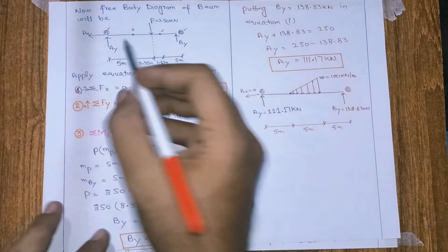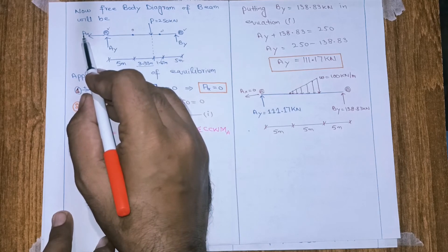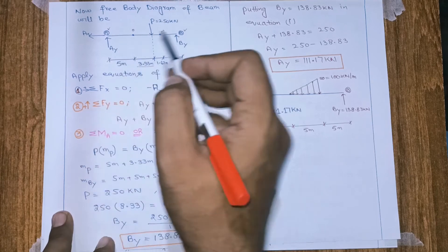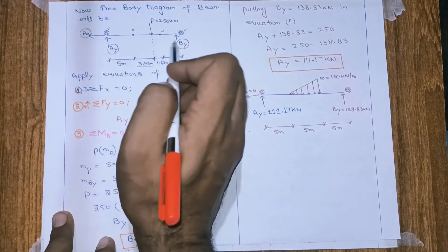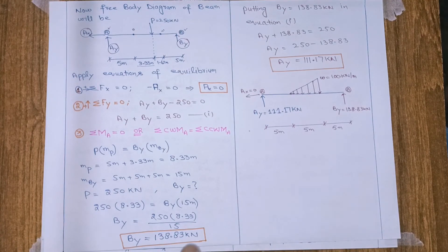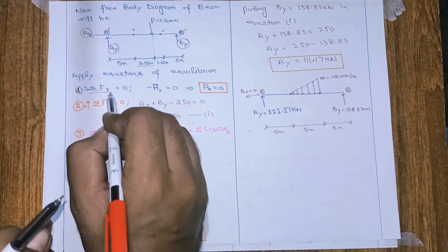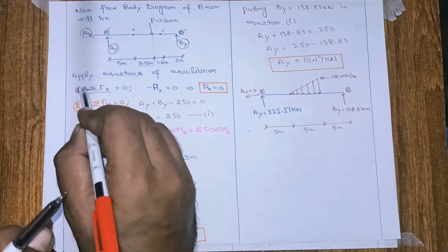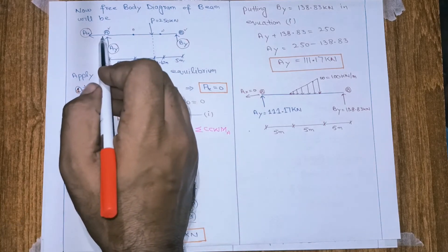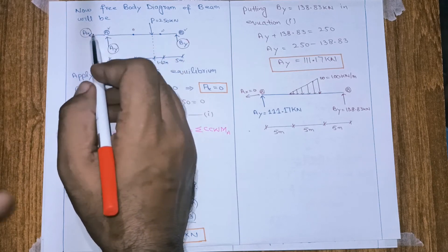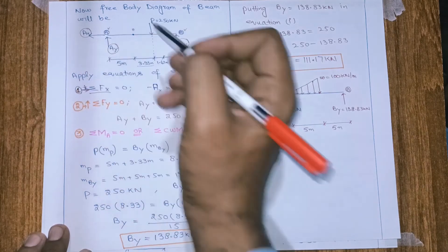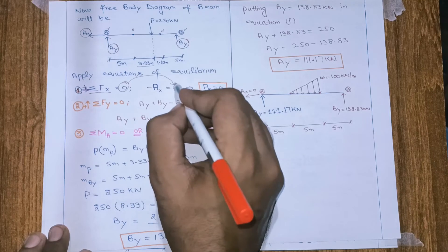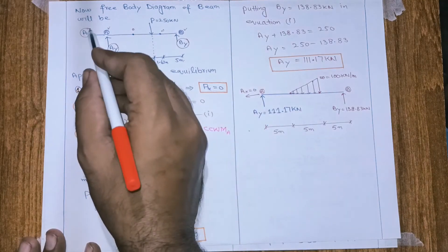We can apply the equations of equilibrium to solve for the three unknown reactions: horizontal reaction at A (AX), vertical reaction at A (AY), and vertical reaction at B (BY). For three unknowns we need three equations of equilibrium. Applying ΣFx = 0, with rightward forces positive, the only horizontal force is AX acting leftward, so −AX = 0, giving AX = 0. The first unknown is determined.